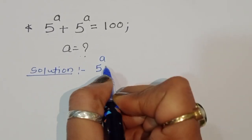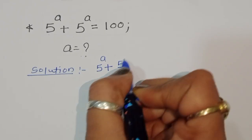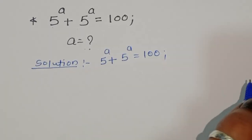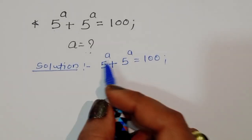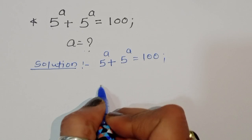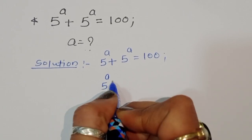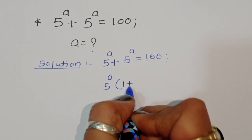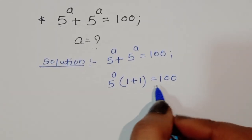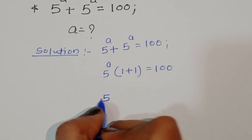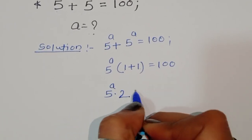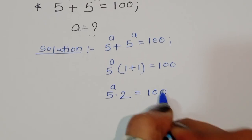5 power a plus 5 power a is equal to 100. Since 5 power a appears two times, we can take 5 power a as common, giving us 5 power a times (1 plus 1) is equal to 100.